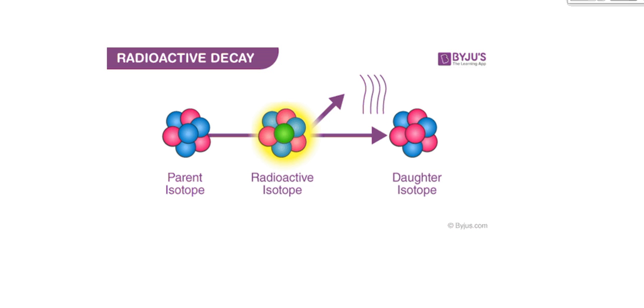And again, the beta particle, electron or positron, whatever it is, would come off at a pretty high velocity because there's a lot of energy associated with that. And that again is a naturally occurring radioactive decay.